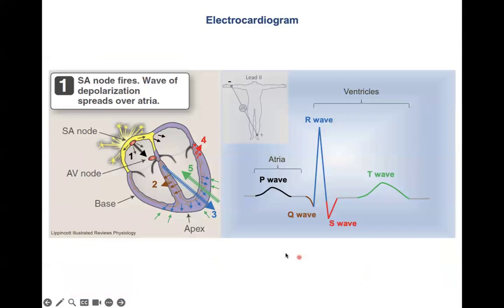To summarize, these are the vectors: the black vector represents the depolarization wave for the P wave; the brown vector (vector 2) represents the Q wave; the blue vector represents the R wave depolarization; vector 4 in red represents the last ventricular region to depolarize — the S wave; and vector 5 in green is the repolarization vector for the T wave.